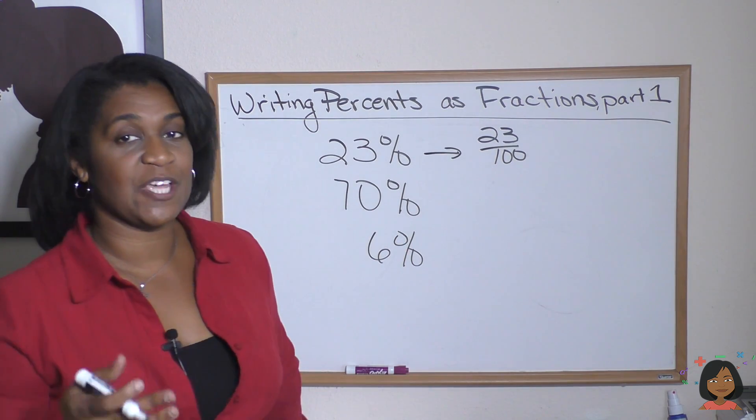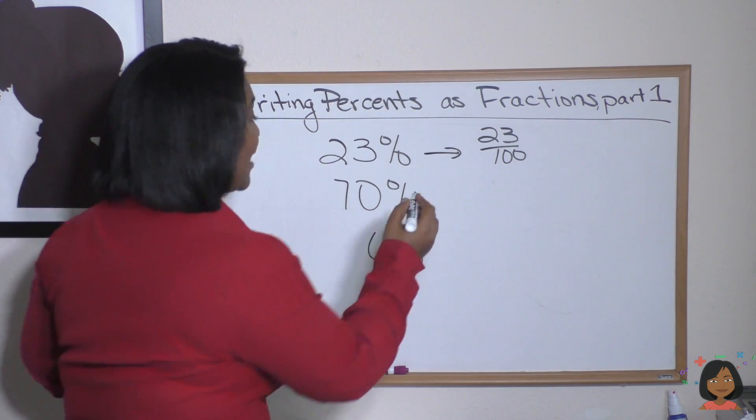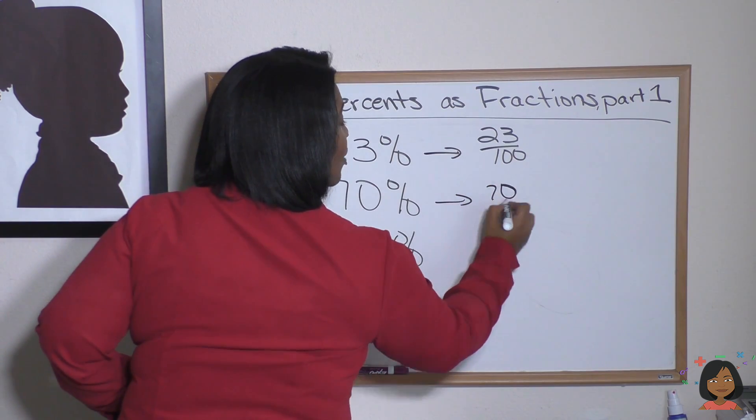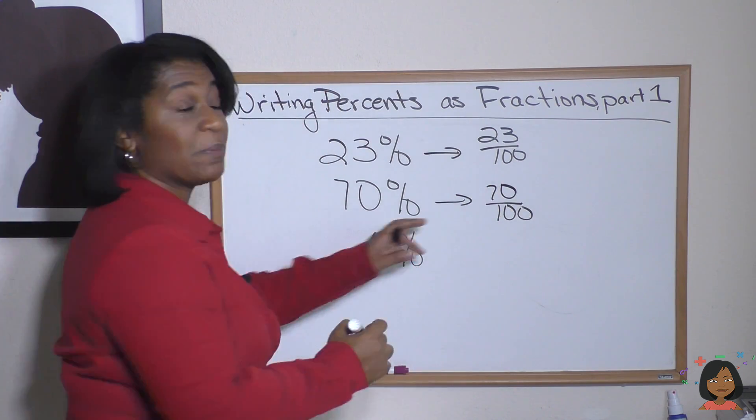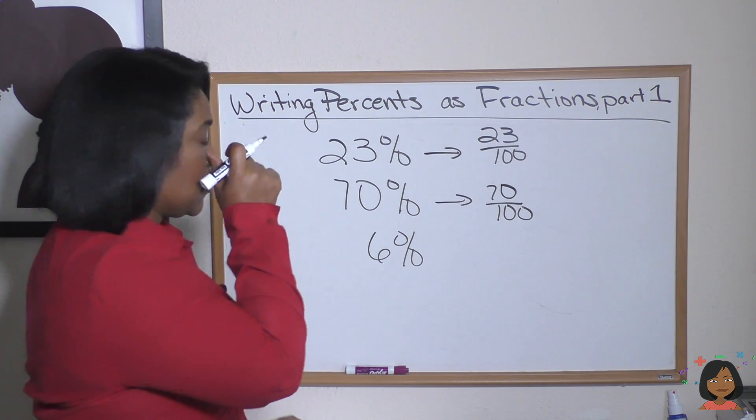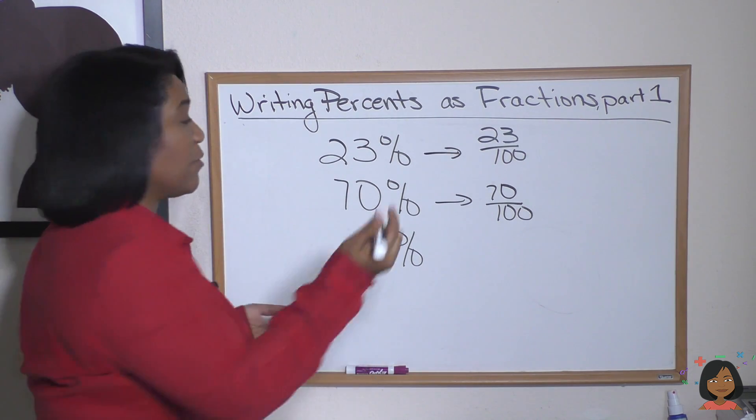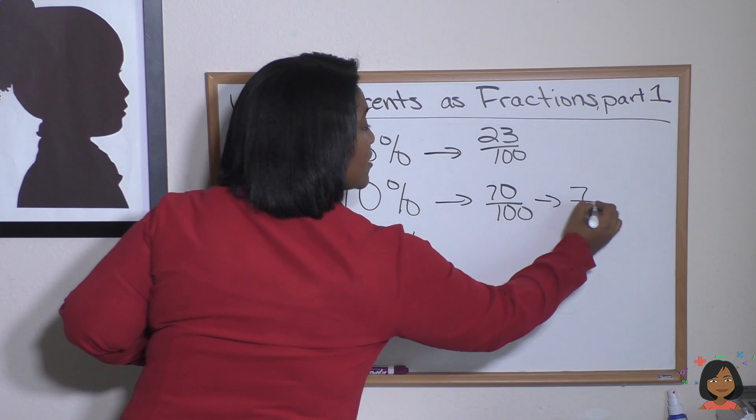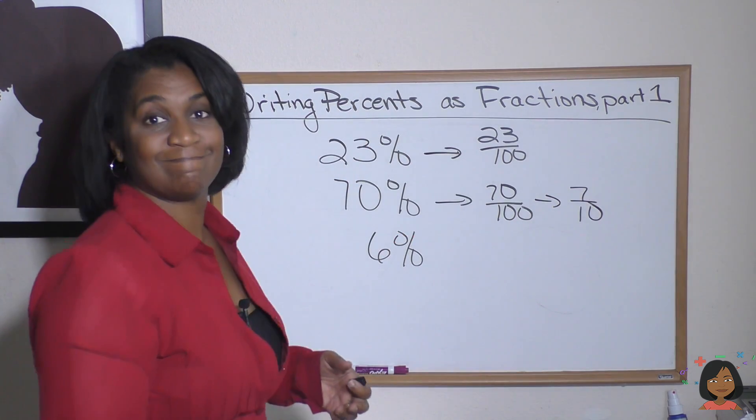What about 70%? That's 70 over 100. That's how we turn it into a fraction, but we can simplify 70 over 100. 10 goes into both of these, which gives us 7 over 10.